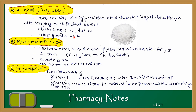Natural wax or vegetable fat is added to obtain a particular melting point. Massa Estarinum is a mixture of di-, tri-, and monoglycerides of saturated fatty acids, with carbon chain length C-11 to C-17. Its formula is C₁₁H₂₃COO-H₂ to C₁₇H₃₅COOH. Grade B is used as a suppository base and is also known as Adeps Solidus.